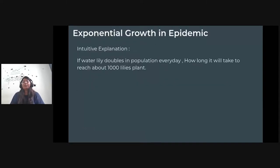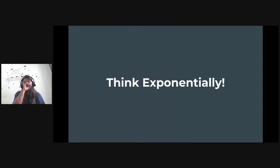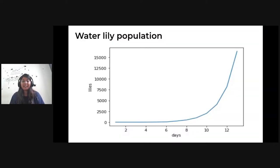So if I ask you a question about if there's a water lily in a pond and it doubles its population every day, at what day it will reach a population of 1000 water lily? So you have to think exponentially. Will it be week one? Will it be week two? 30 days? So the answer is 10 days. It will take 10 days for that one water lily to reach from a population of 1 to 1000.